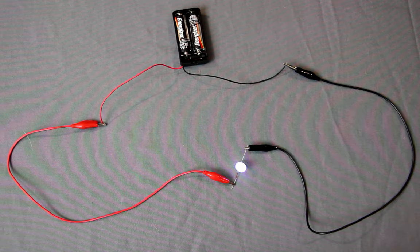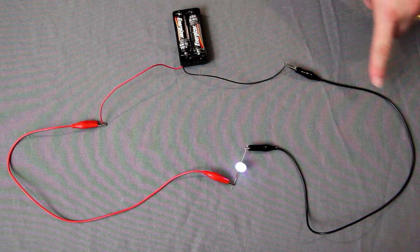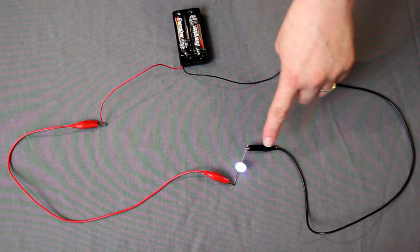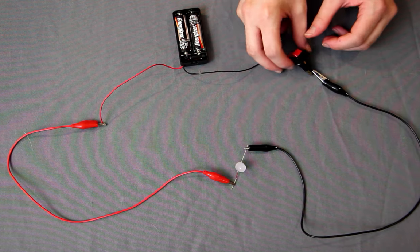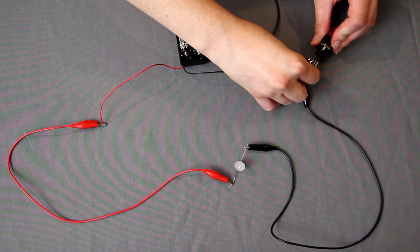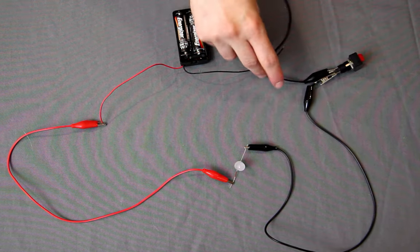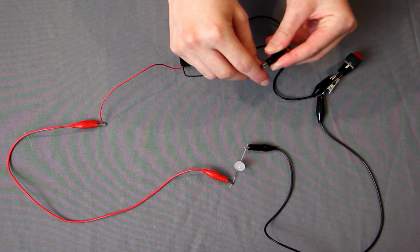As a quick review, here we have a simple circuit. It has a battery that provides the power, wires for the electrons to move through, and a light bulb that the electricity can power. We can also add in a switch, and this lets us connect or disconnect, or open and close, the circuit as needed.